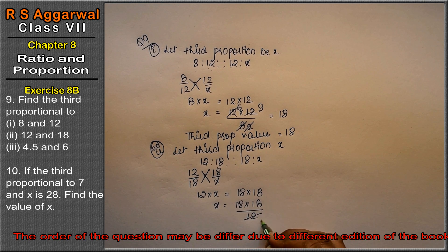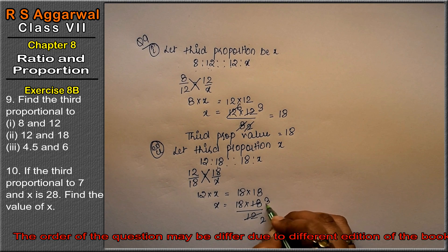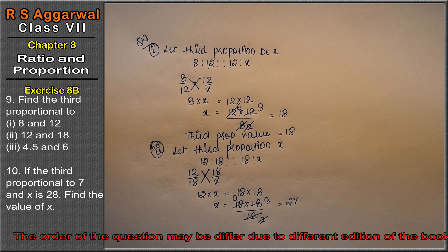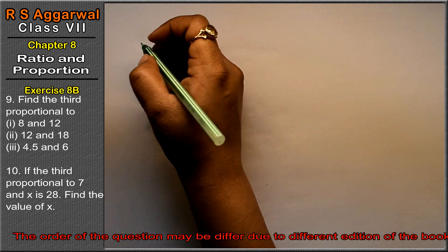6 twos are 12, 6 threes are 18, 2 ones are 2, 2 nines are 18. So how much is this? 27 is the answer. Let's do third part.